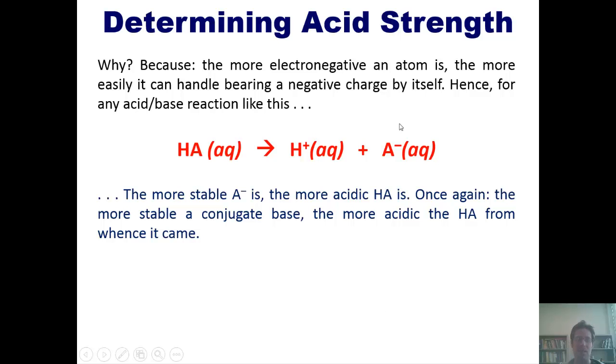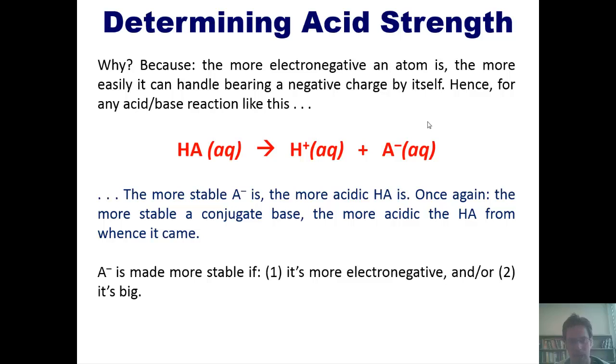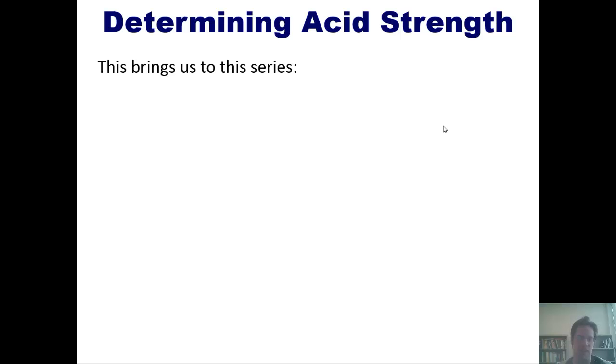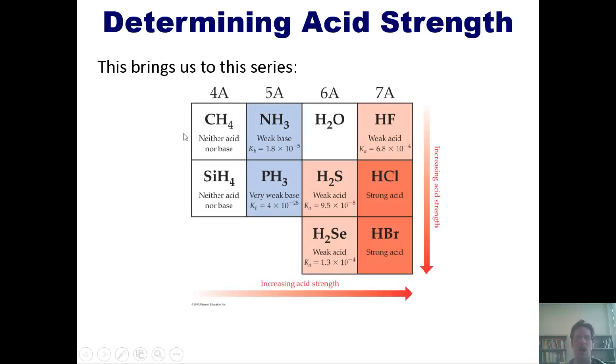In other words, the more stable this A- is, the more easy it's going to be for HA to lose a hydrogen and turn into A-. Does that make sense? I hope so. Therefore, the more stable A- is, the more acidic HA is. A- is made more stable if, one, it's more electronegative, and or two, it's big. Remember, then, the more electronegative an element, the better or more easily it can handle a minus charge. Furthermore, the larger an element, the better it can handle a negative charge. Hopefully, we're kind of wrapping our heads around that, then, because it brings us to this important series where we can see the relative acidities of different substances.